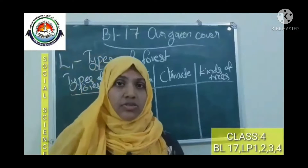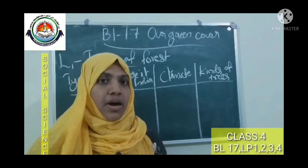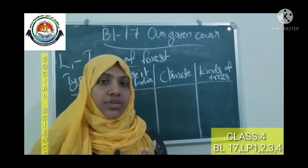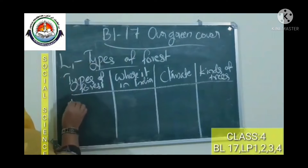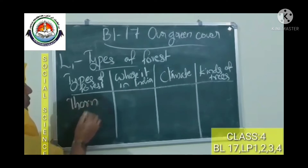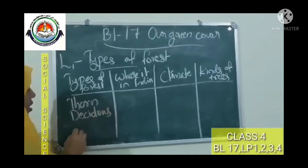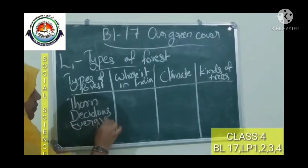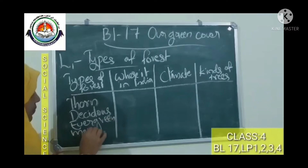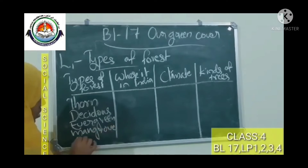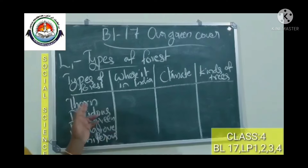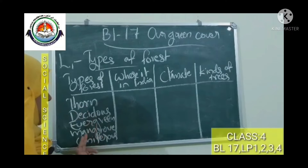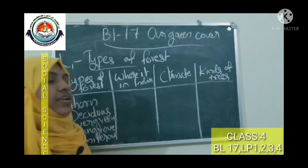So what are the various kinds of forests we have read about? We have read about different kinds of forests. Thorn forest, deciduous forest, evergreen forest, mangrove forest, and coniferous forest. Let's name them again: thorn forest, deciduous forest, evergreen forest, mangrove forest, and coniferous forest.